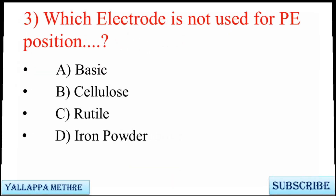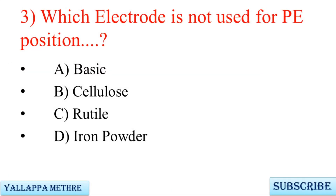Question 3: Which electrode is not used for positional welding? A. Basic, B. Cellulose, C. Rutile, D. Iron powder.